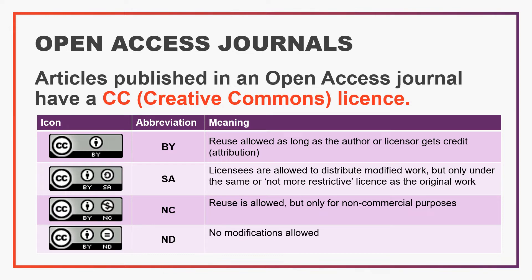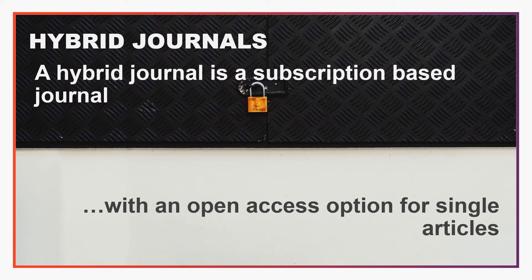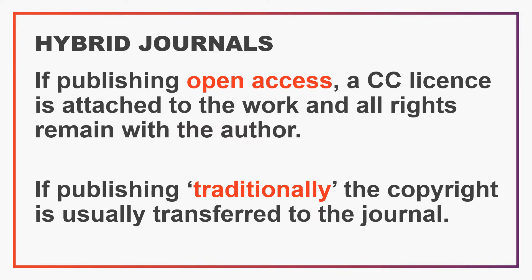If you're funded you might be restricted as to which license you can use. As the name suggests, hybrid journals are a mix of publishing in a subscription-based journal and an open access one. Publishing in a hybrid journal means that whilst the journal operates as a subscription-based journal overall, there is the option for authors to pay to make their article available open access. Like with publishing in an open access journal, if you pay to make your work open access in a hybrid journal you retain the rights for the paper and attach a CC license to the work. If you publish traditionally in a hybrid journal the copyright is usually transferred to the publisher, like with a subscription-based journal.